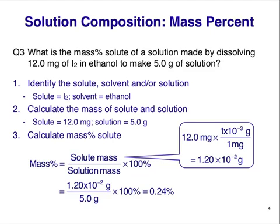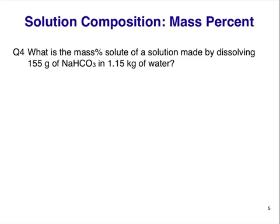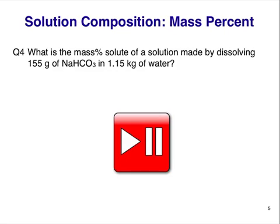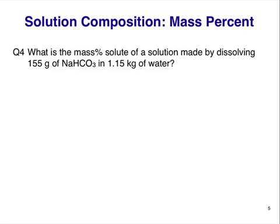We are going to continue building complexity in these calculations with the next problem. Question 4. What is the mass percent solute of a solution made by dissolving 155 grams of NaHCO3 in 1.15 kilograms of water? Pause the video now and work out your answer.